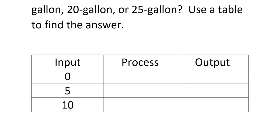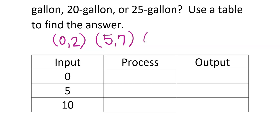First, look at the graph and pick three ordered pairs you can name exactly. The book chose (0, 2), (5, 7), and (10, 12). The inputs are the first numbers, and the outputs are the second numbers: output for zero is two, output for five is seven, and output for ten is twelve.